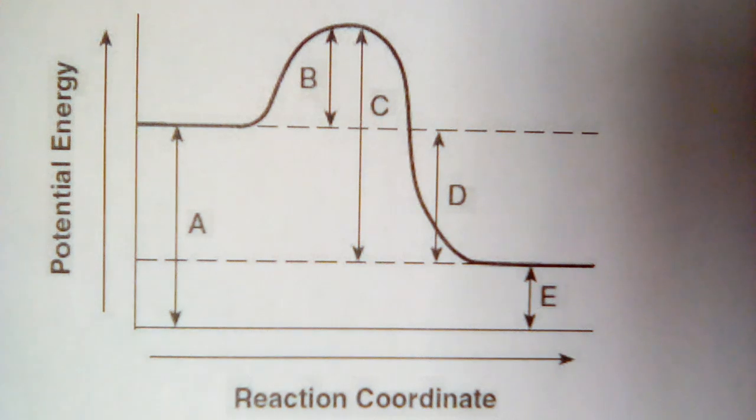The first thing you have to be able to tell from one of these potential energy diagrams is what type of reaction is taking place, whether it's endothermic or exothermic. And for that, we have to look at the relative energies of our reactants and products.